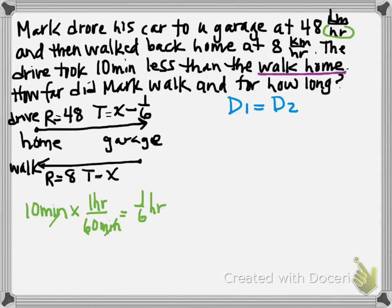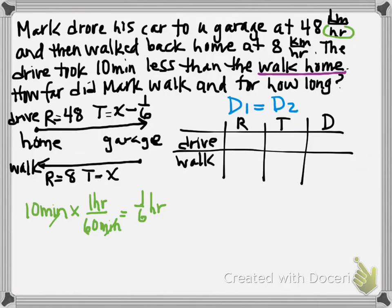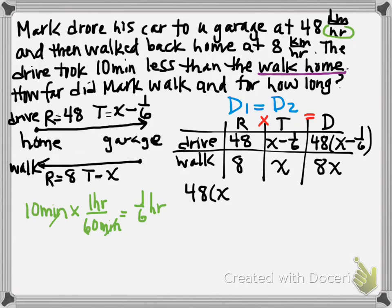Okay. Alright, let's do our chart. So we have a drive portion and we have a walk portion. Rate, time, distance. Rate for driving was 48. Time, x minus 1 sixth. And remember, rate times time equals distance to give us 48 times the quantity x minus 1 sixth. The walking took a rate of 8 and a time of x for a total of 8x. Alright, since the two distances are the same, I'm going to set them up. And if I go this direction, I've got my bigger x on the left. So I don't have to deal with negatives. So 48 times x is 48x. 48 times negative 1 sixth is negative 8 equals 8x. I'm going to subtract 8x from both sides to get them on the left. I'm going to add 8 to both sides to get the constants on the right. I get 40x equals 8. Divide by 40. And we get x equals 1 fifth.